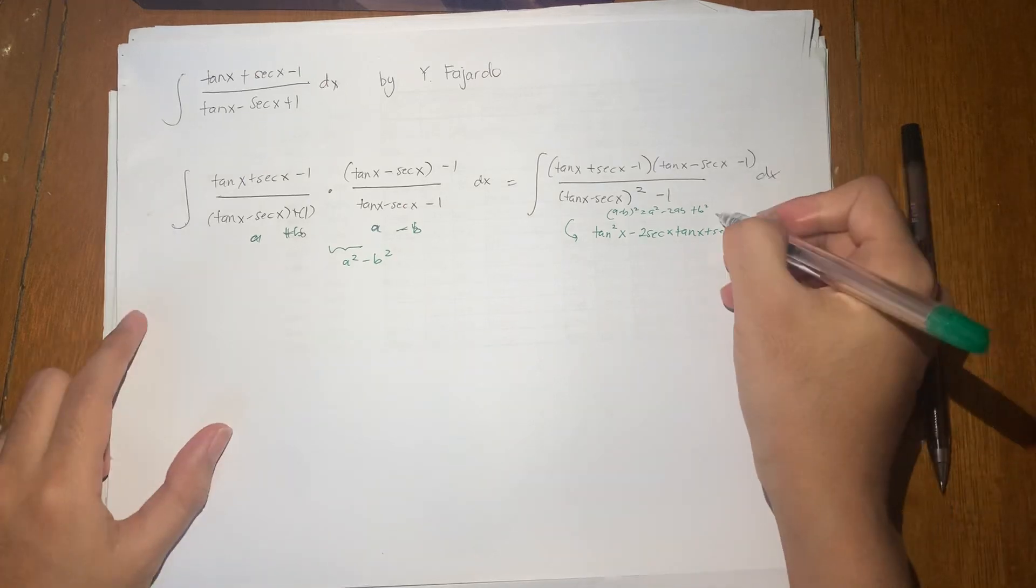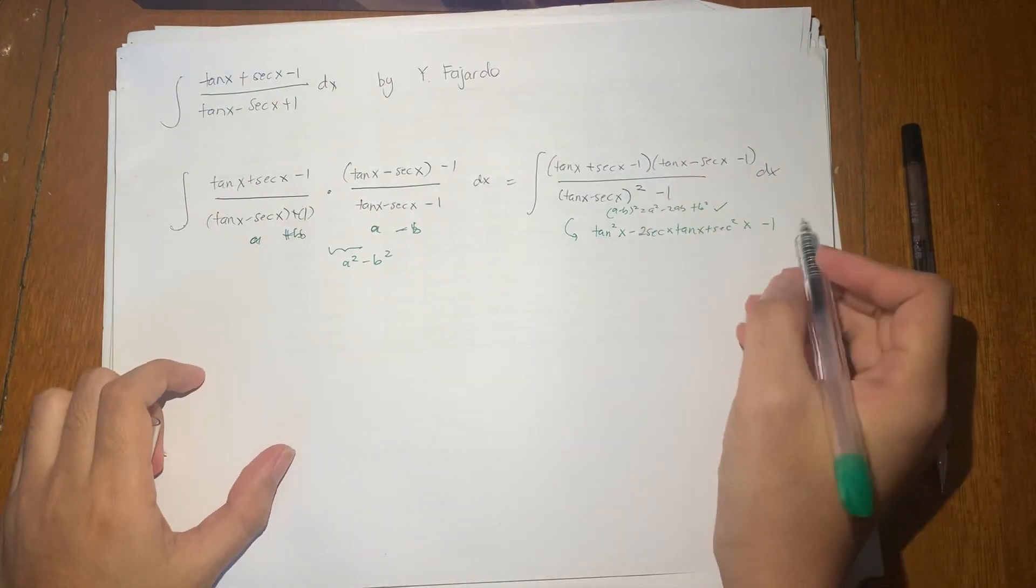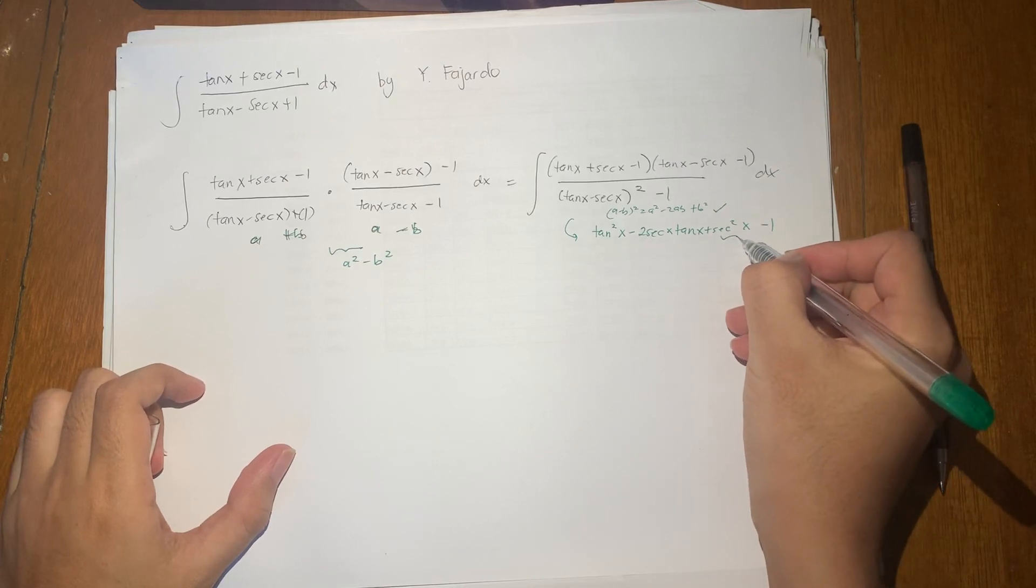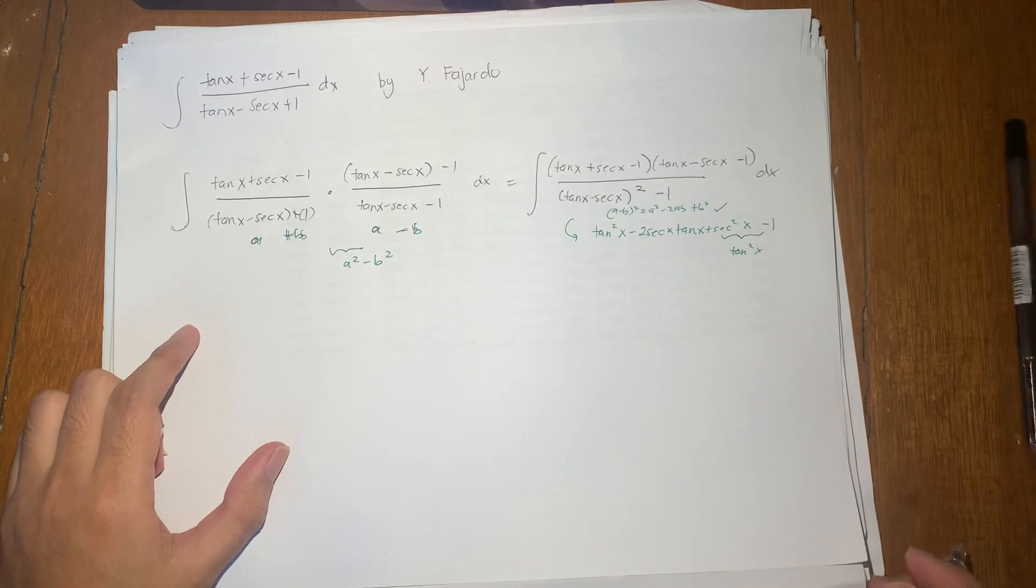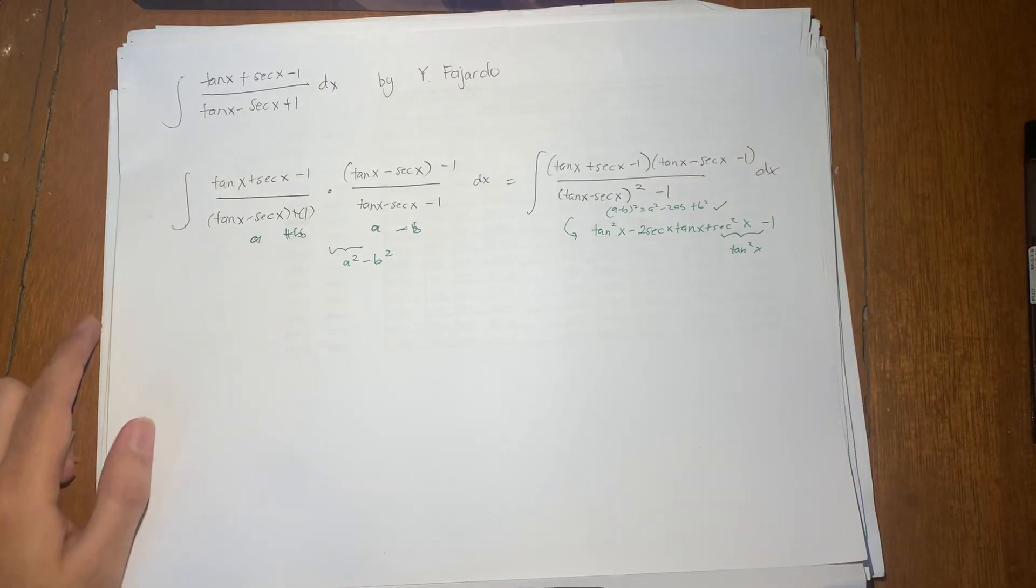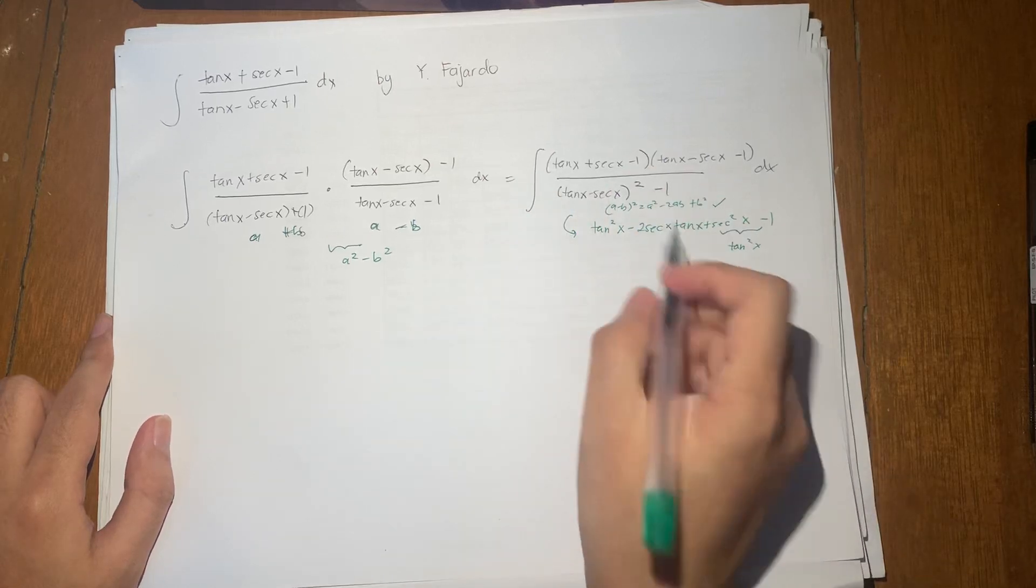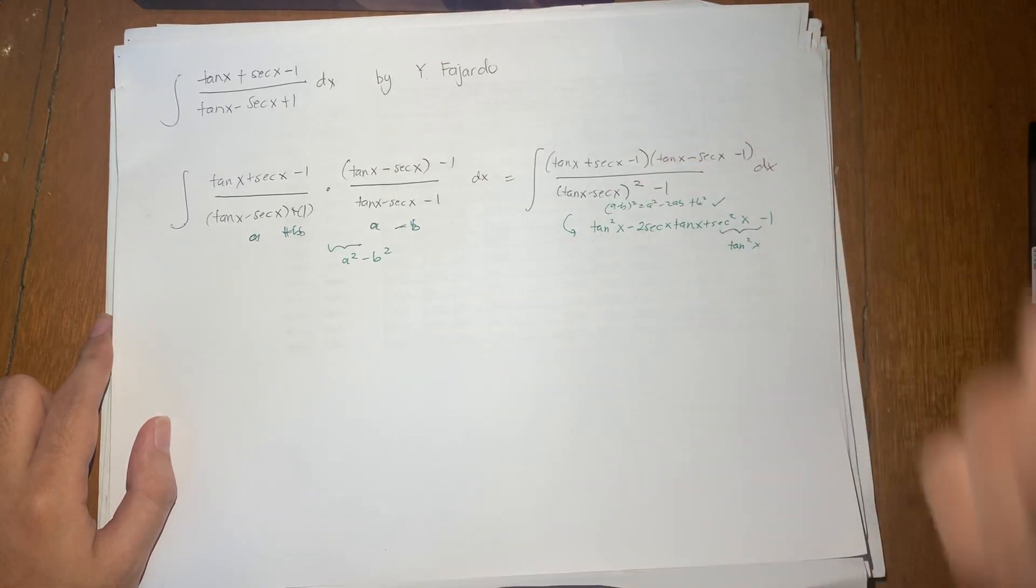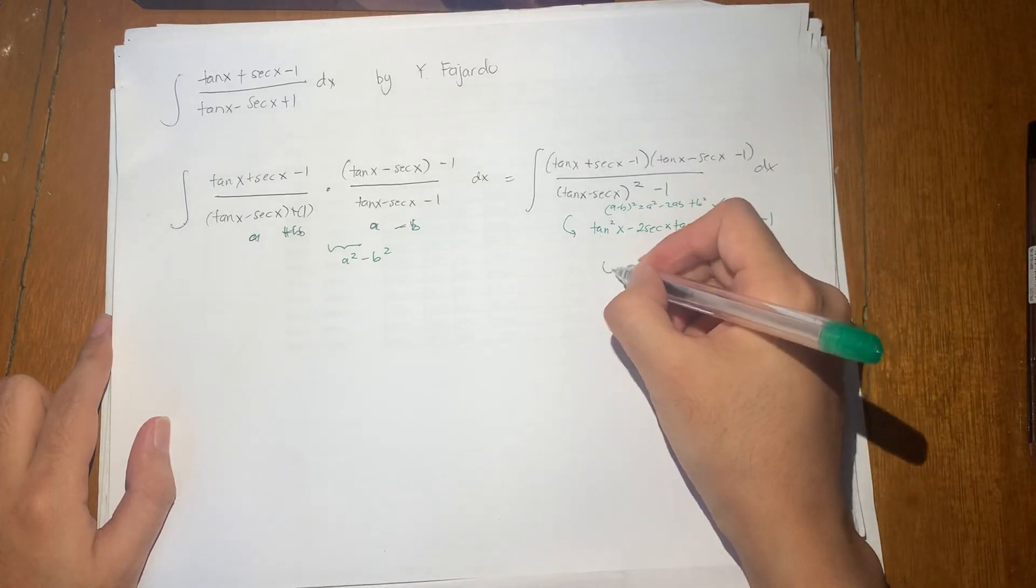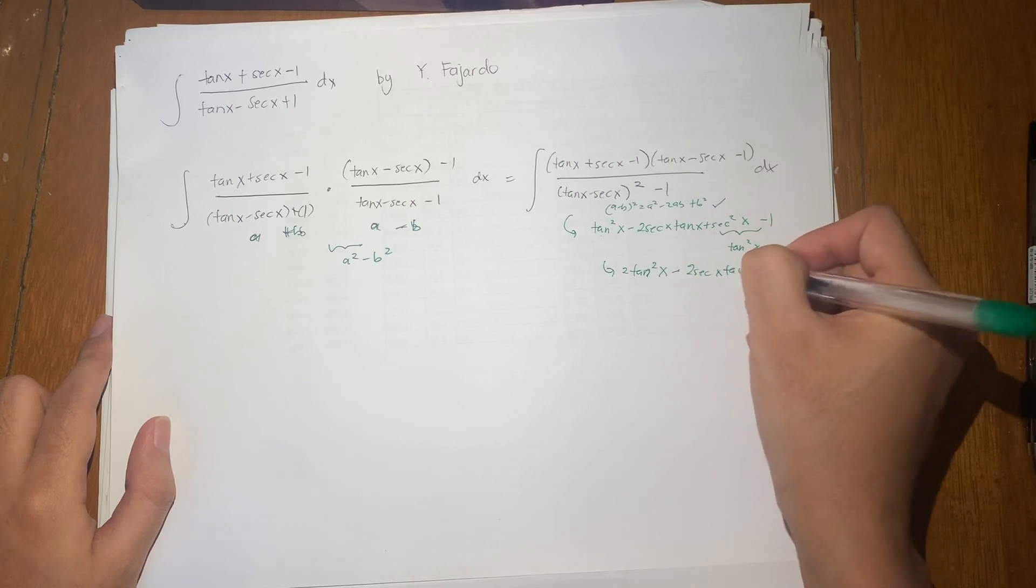So I hope you still remember this identity. Anyway, from here, we note that secant squared x minus 1 is just tangent squared x by the Pythagorean identity for secant and tangent. Therefore, this whole term becomes tan squared plus tan squared, 2 tan squared becomes 2 tan squared of x minus 2 secant x tan x.